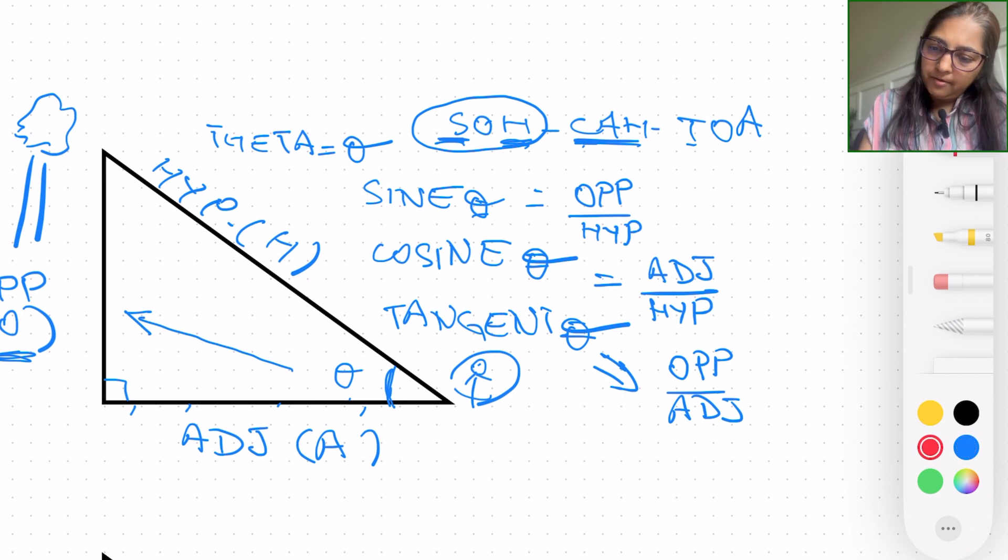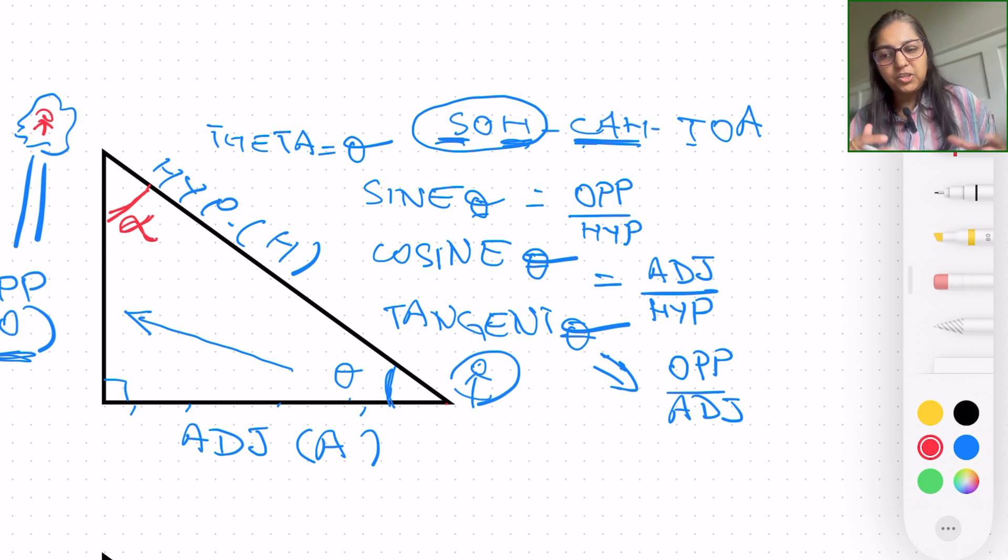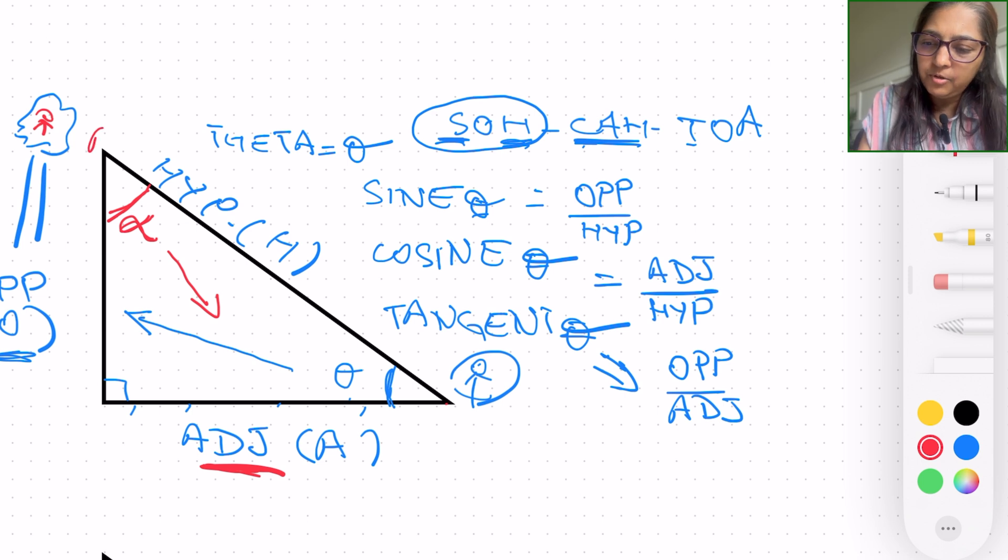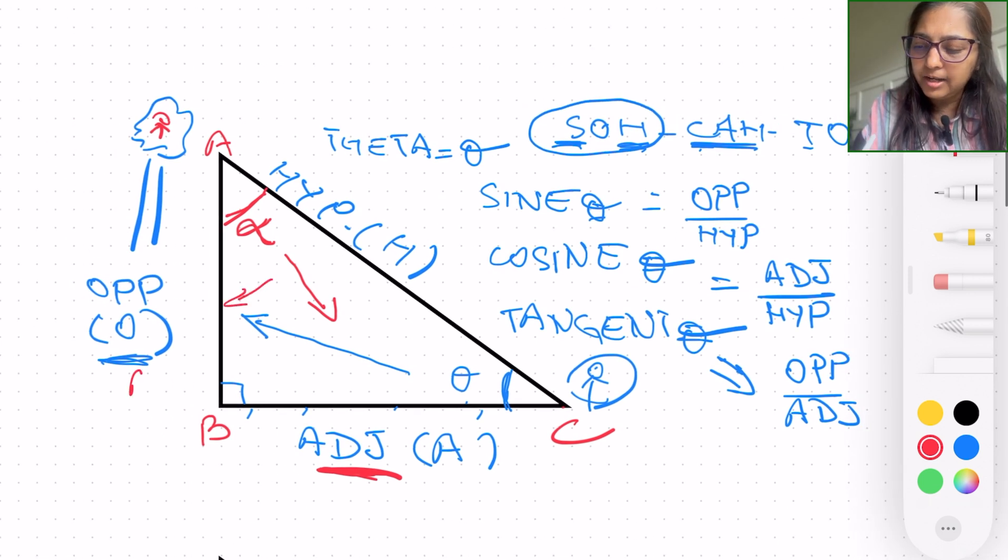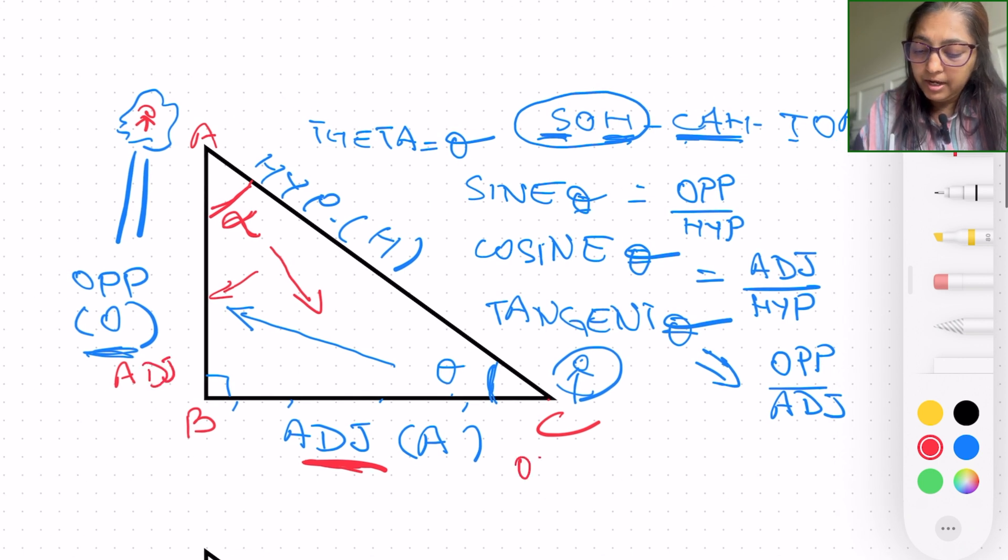Now let's say, let me change the color. If I chose this angle instead, alpha, like somebody is sitting right here on the tree and looking at the ground and wants to know how far on the ground from the tree am I from the angle alpha, then the opposite and the adjacent measurements change. So now with reference to alpha, the side opposite will be right here. So this will be opposite for alpha. Let me label. So you can see ABC. So BC becomes the opposite for alpha, and AB becomes the adjacent for alpha.